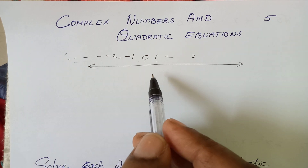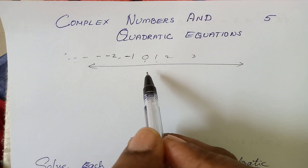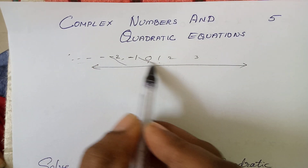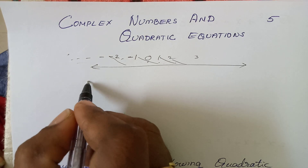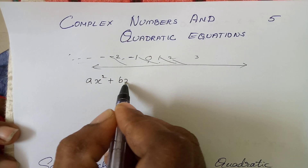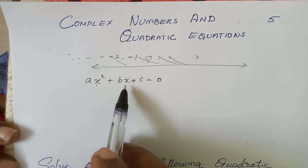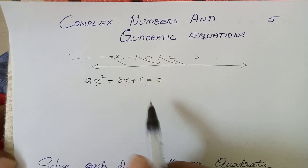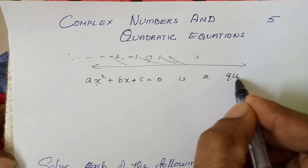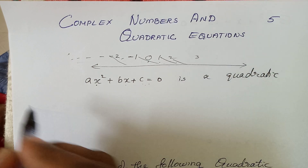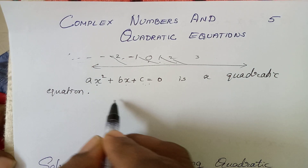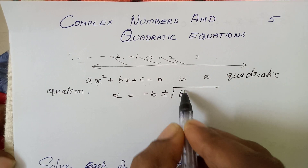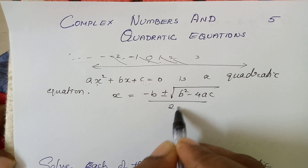That's why we use quadratic equations. We use quadratic equations with the form ax squared plus bx plus c equals 0, where a, b, c are real numbers. This quadratic equation is solved using the quadratic formula: x equals minus b plus or minus root of b squared minus 4ac, divided by 2a.